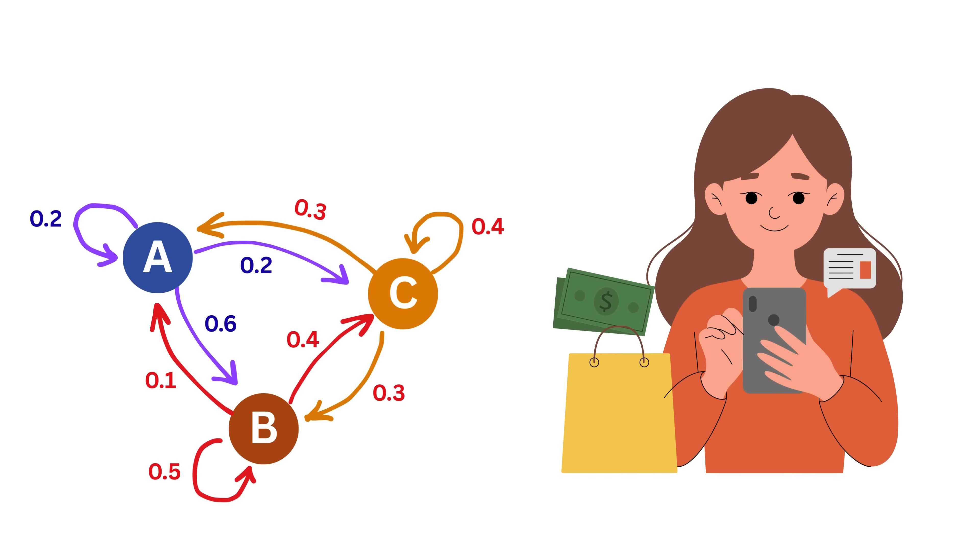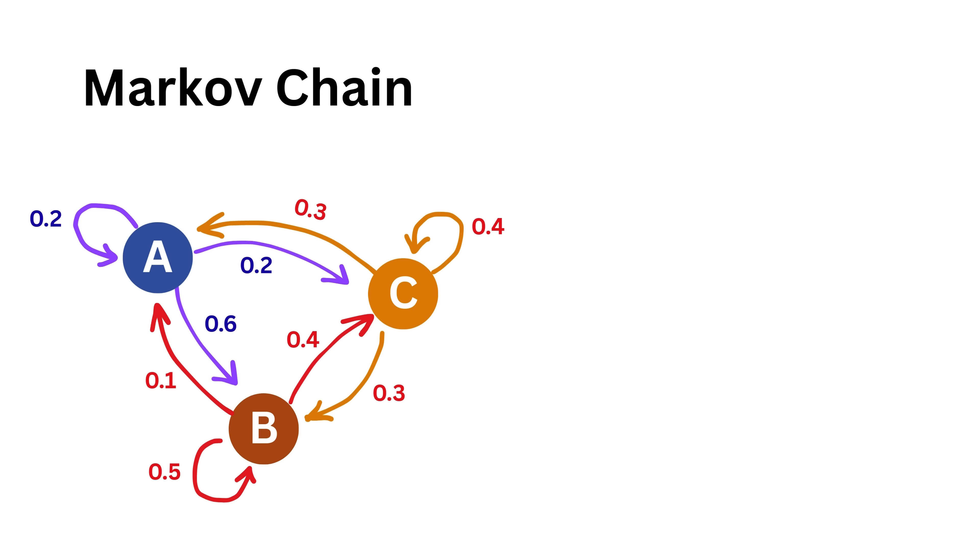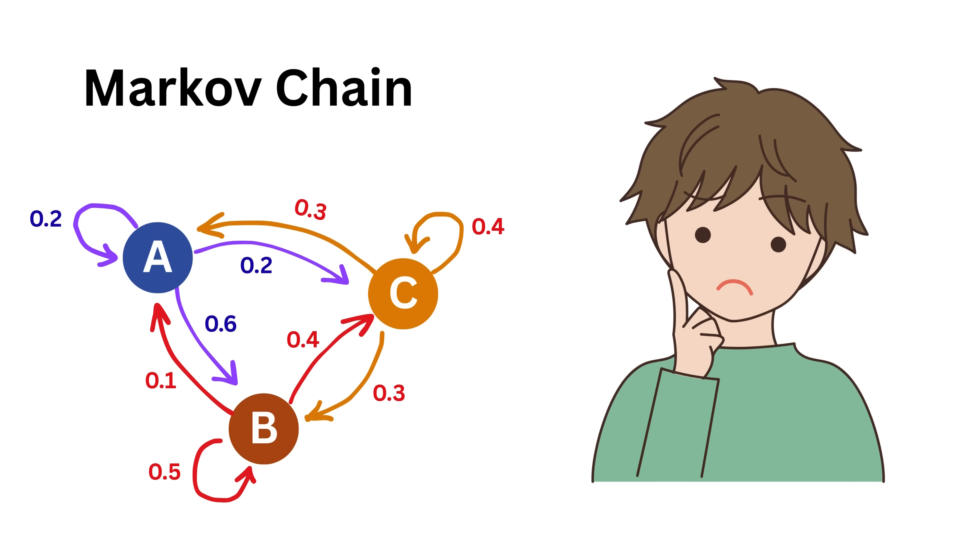Now, looking at all these transitions in one diagram, we get a complete picture of how users move between pages. This diagram is what we call a Markov chain. Yes, the concept is that simple.